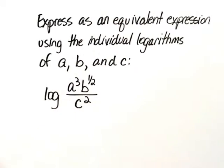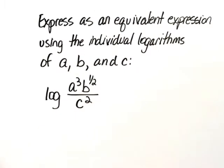In this next set of exercises, we'll be using the rules of logarithms. Express as an equivalent expression using the individual logarithms of A, B, and C. Log of the quotient A cubed times B to the 1 half divided by C squared.